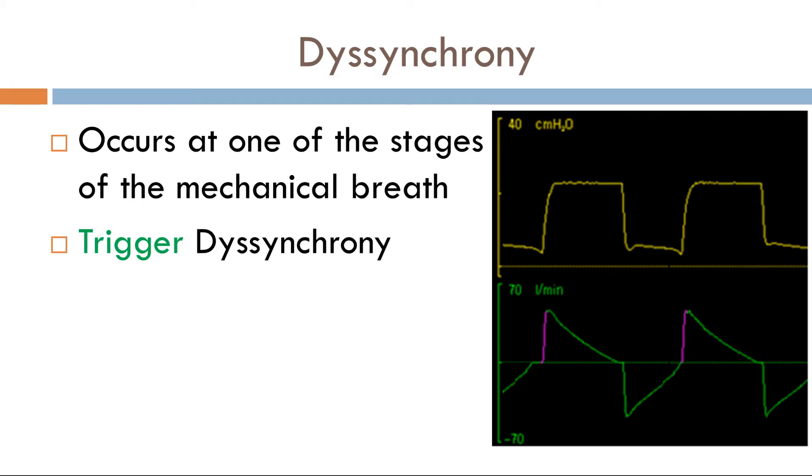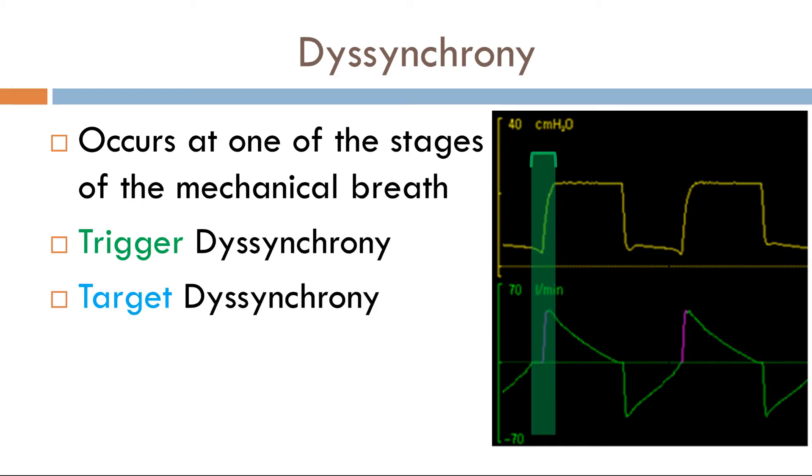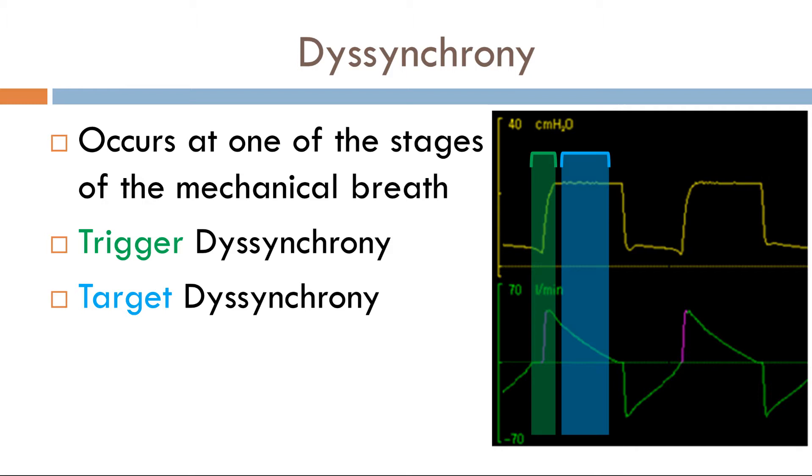So if you have trigger dyssynchrony, it occurs here. If you have target dyssynchrony, it occurs here. And if you have cycle dyssynchrony, it occurs here. Each of these three dyssynchronies have a subset of dyssynchronies associated with them. So if you can identify which phase the dyssynchrony is occurring, that will narrow your differential and ultimately impact your management. So it's crucial to identify which phase the dyssynchrony is occurring.